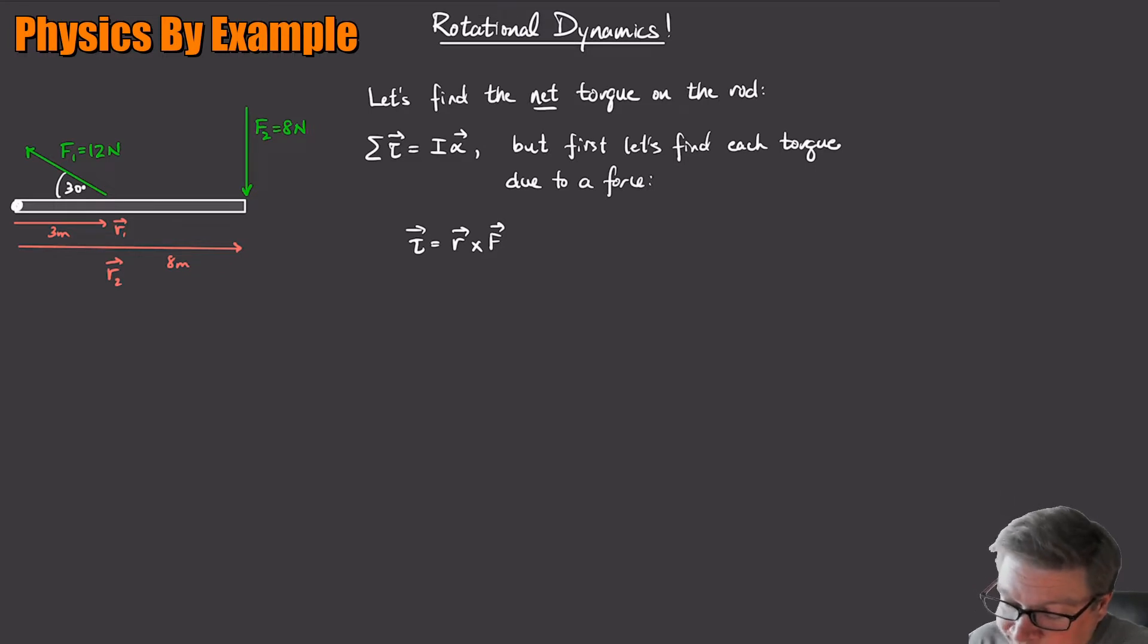So torque one is going to be R1 cross F1. And remember how cross products work. That's just going to be RF sine theta. This is the form of the cross product that we want because we know the magnitudes of those vectors and the angle between the vectors. So we can compute the torque this way. So R1 F1 sine theta. And what is that theta? Theta is the angle between R and F. So let's see how to figure that out.